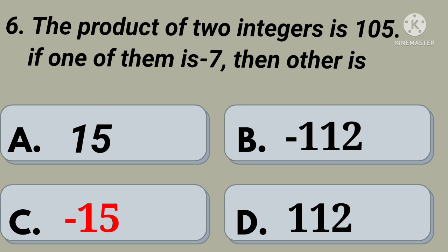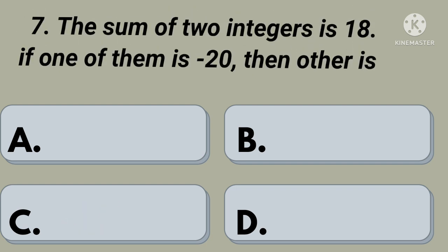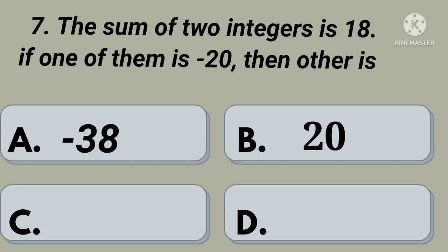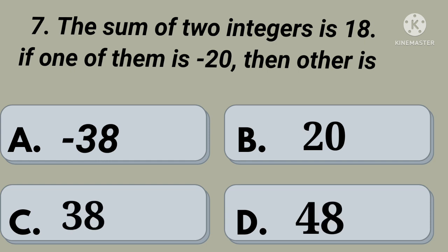Seventh question: the sum of two integers is 18. If one of them is minus 20, then the other is. Option A: minus 38, option B: 20, option C: 38, option D: 48. Your time starts now. Right, option C: 38.